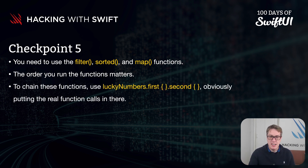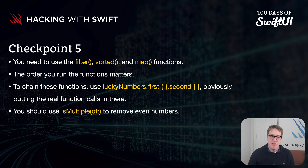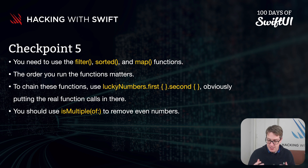To chain them, you can just write luckyNumbers dot first function open and close braces dot second function open and close braces, and so on — putting the real code in the closures. And finally, use isMultiple(of:) to remove even numbers. Those are all the hints. It's a good challenge, go give it a try and have fun.